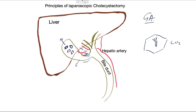Once the structures are isolated, the surgeon places clips on the cystic duct — one clip and then another further up — and two clips on the artery with one a bit further away. Scissors are then used to cut and divide these structures.